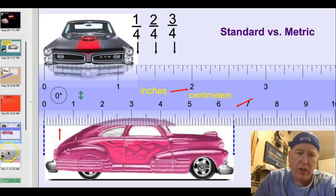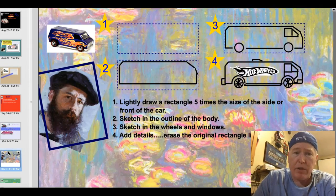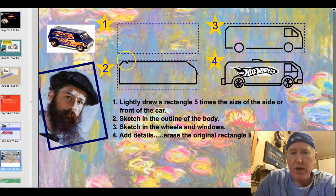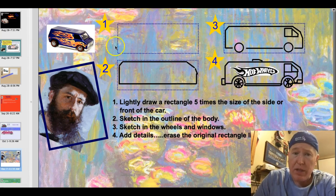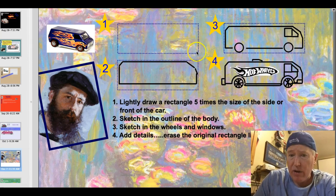All right, now I'm not too great at art so I went to my friend Claude. He dabbled in art throughout his life and here's what he came up with. Four quick steps. Number one, lightly draw a rectangle five times the size of the side or the front of the car. So this would be the height of the car and the length of the car if I was doing the side.